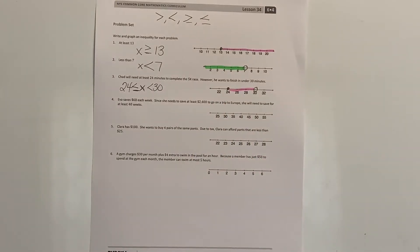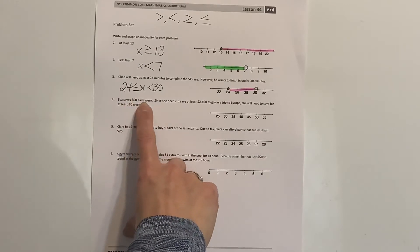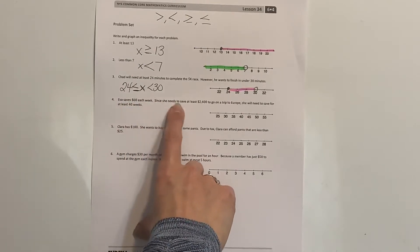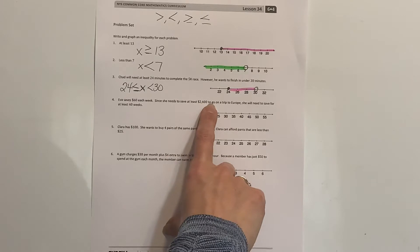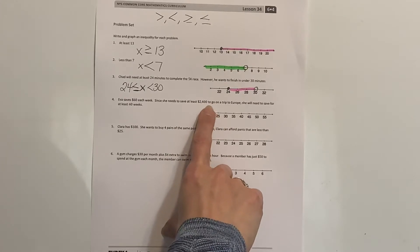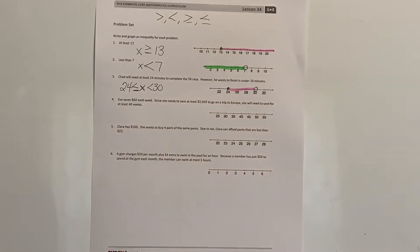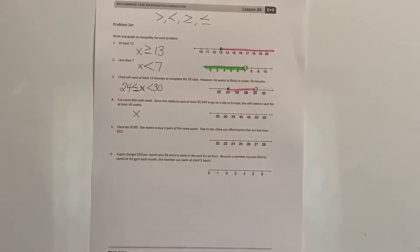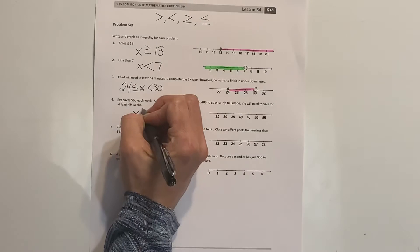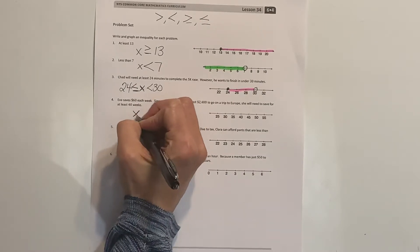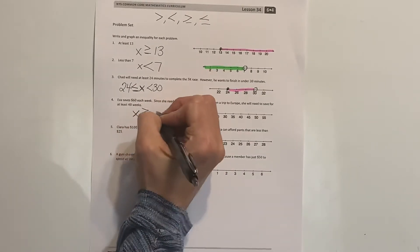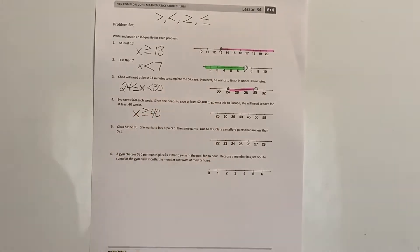Ava saves $60 each week. Since she needs to save at least $2,400 to go on a trip to Europe, she will need to save for at least 40 weeks. So Ava's amount of time she saves is going to have to be greater than or equal to 40 weeks.